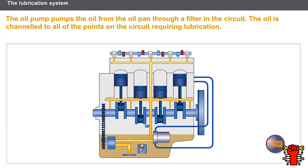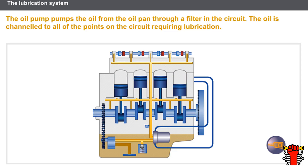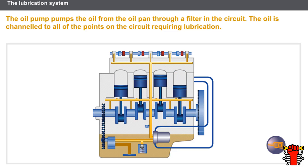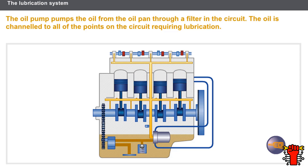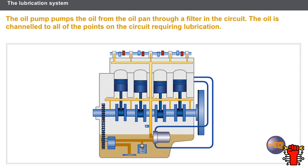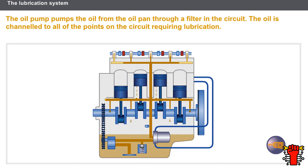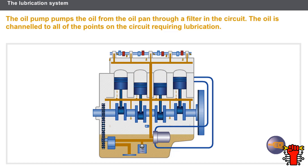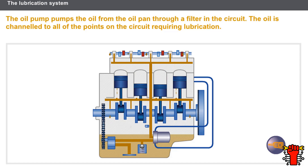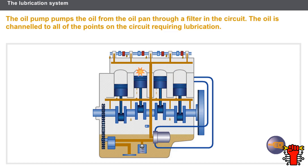The lubrication system operates as soon as the engine is started. The oil pump pumps the oil from the oil pan. The oil is then sent through a filter. Finally, the oil is channeled to all of the points on the circuit requiring lubrication before going back to the oil pan.